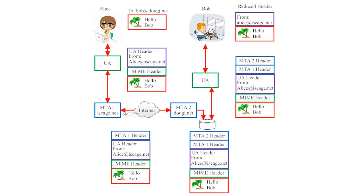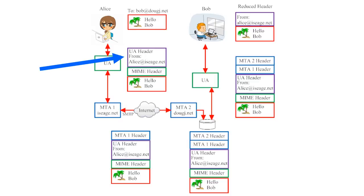Every email keeps an official record of what it is and where it's been. When Alice first composes the email, all it contains is a message and an address. However, once she hits send, her user agent will attach a header that gives the recipient more information — including a return address, which shows the recipient who the email came from. It will also add something called a MIME header. MIME stands for Multipurpose Internet Mail Extension. When email protocols were first designed, they were only designed to handle plain text messages. MIME allows email systems to work around this limitation, enabling emails to carry different design elements beyond plain text — such as images, special fonts, and file attachments. In this case, the MIME header will say that Alice's email contains text and an image.